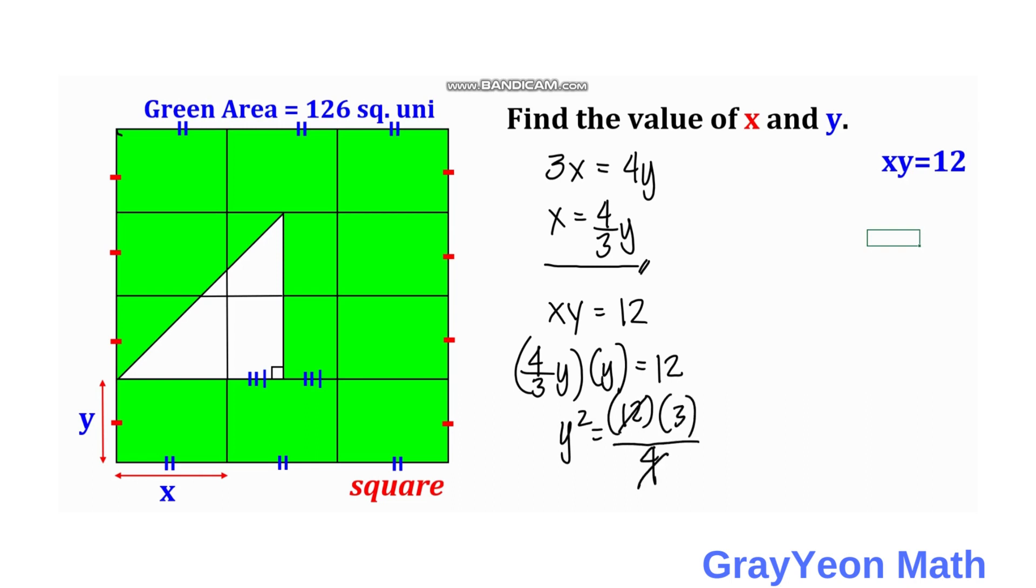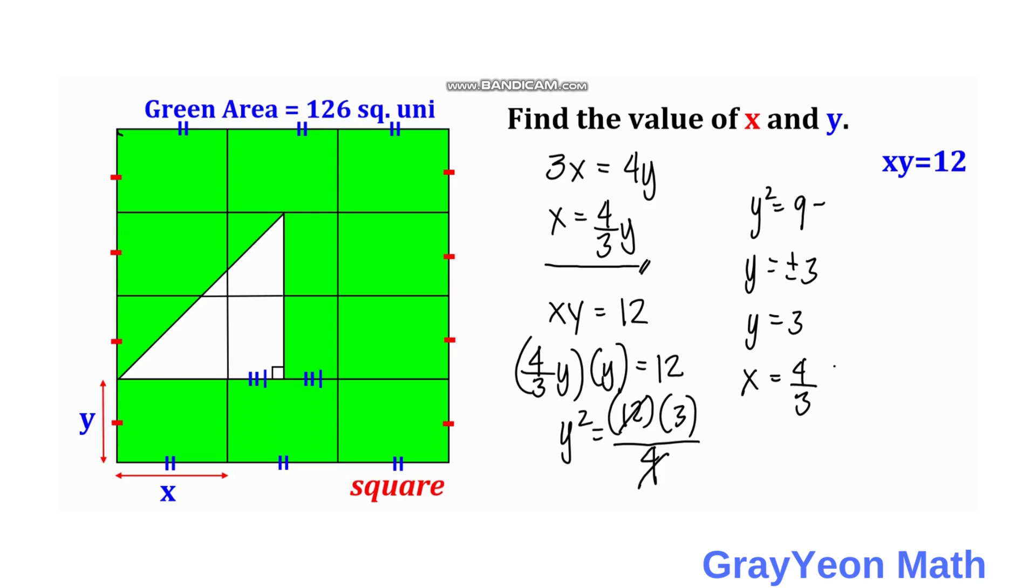This becomes 3 times 3 equals 9, so y squared equals 9, so y equals plus or minus 3. We are after the positive value, so y equals 3. Then x equals 4/3 times 3, so x equals 4.